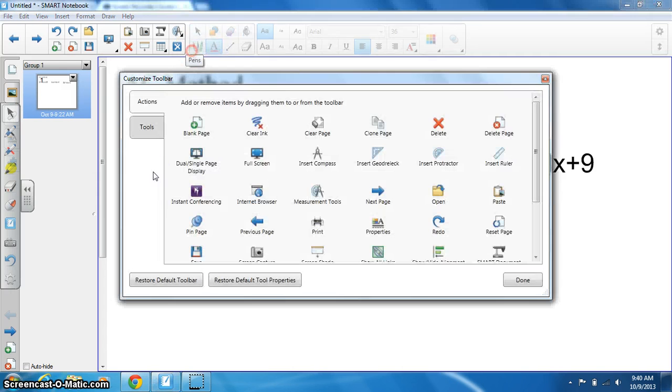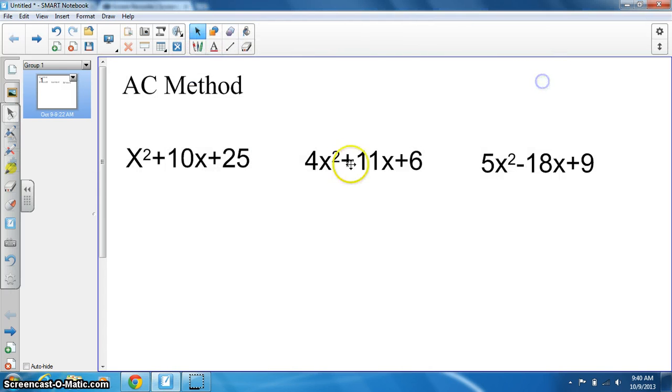First, we have our first equation: x² + 10x + 25. This is considered easy compared to the rest. Before we do the AC method, we have to identify the first term as A (the x²), the 10x as our B term, and 25 as our C term.